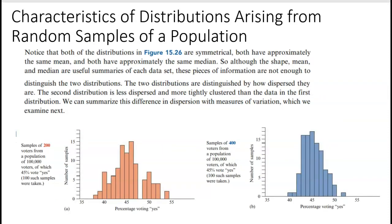If we notice that both of the distributions here are symmetrical, they have approximately the same mean or balancing point and approximately the same median. Although the shape, mean, and median are useful, it's not really enough to distinguish them because they're all pretty similar. The two distributions are distinguished by how dispersed they are. If you kind of look here, we can see that it's kind of spread out from mid-30s all the way to 55, where this is only spread from 40 to 55. So these are more spread out than this. We can summarize the difference in dispersion with measures of variation, the way things are spread out or differ.